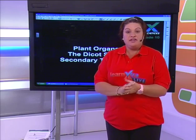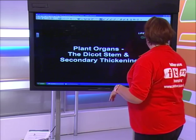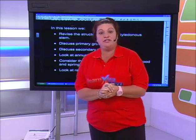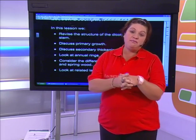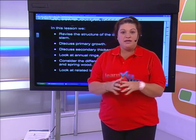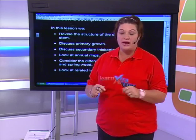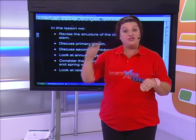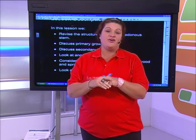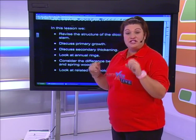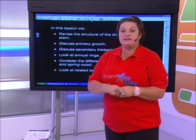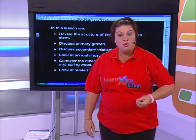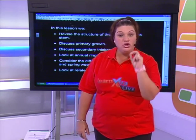We're going to be looking at secondary thickening or secondary growth in a plant. Some of the things we're going to look at today: if you tuned in last week, you would have seen us do the dicot stem and the dicotyledonous root. Very important for tonight is that basic knowledge of the dicotyledonous stem, because it's the dicot stem that is going to grow wider. We're going to look at those annual rings — how do we get those rings in the trees, how can we count them? And always look at the related terminology: annual rings, lenticels, cork — those are the words we use to describe it.